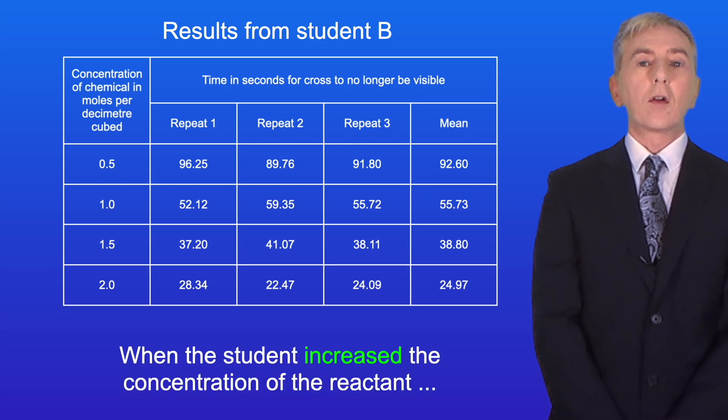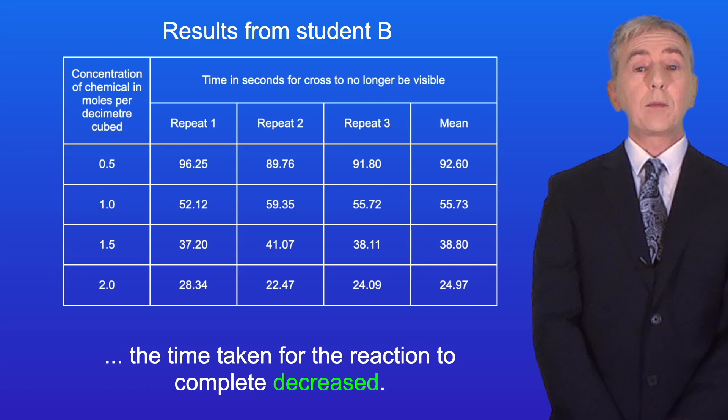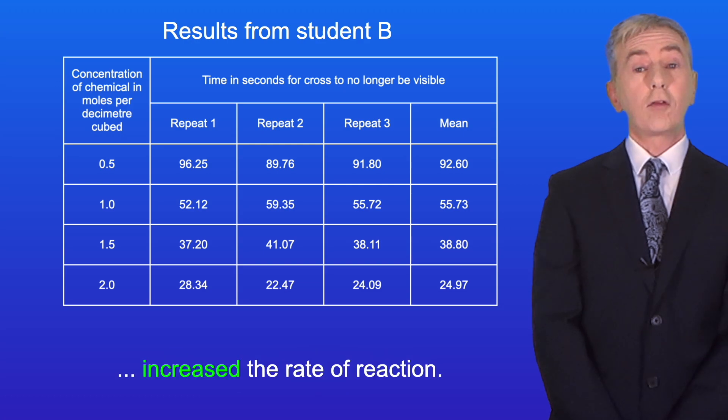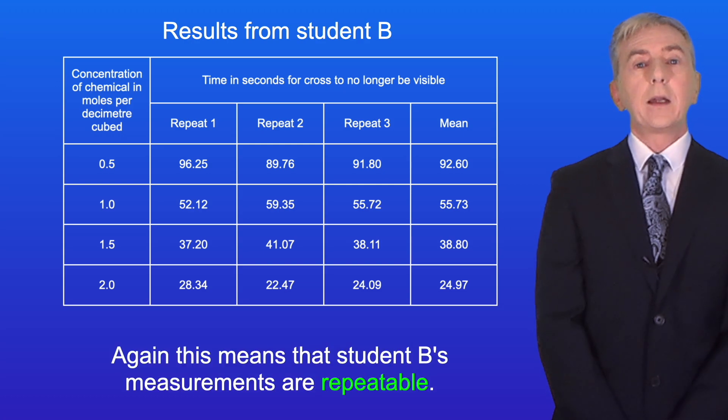When the student increased the concentration of the reactant, the time taken for the reaction to complete decreased. In other words increasing the concentration increased the rate of reaction. And again this means that student B's measurements are repeatable.